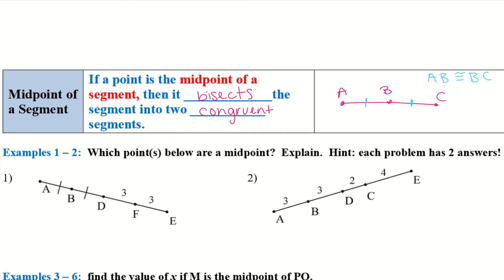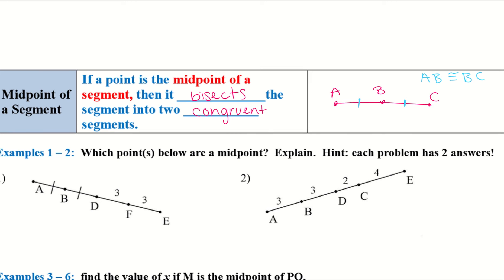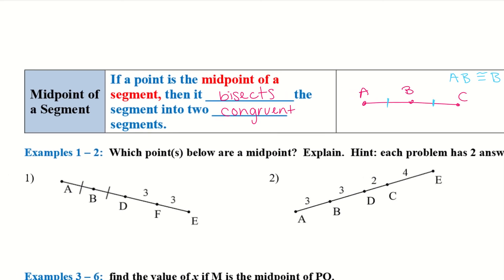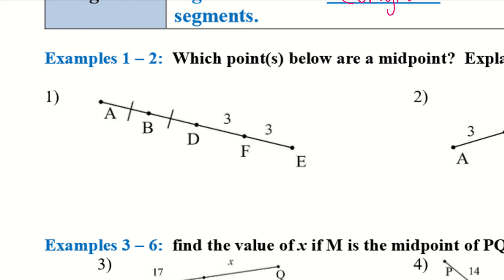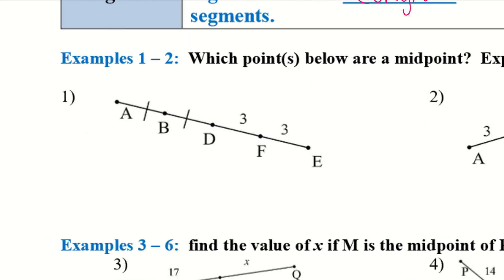So examples one and two, which points below are a midpoint? Explain. Hint: each problem has two answers. So let's take a look at number one. I can see that these two lines mean that AB and BD are congruent to one another. So if I'm just looking at this part of the line, I can say that B is the midpoint of this segment. It divides AD in half.